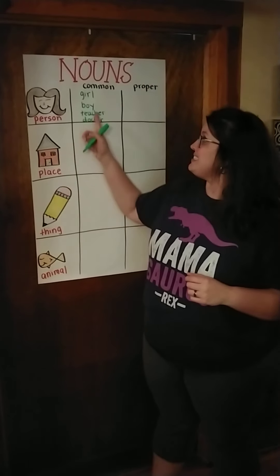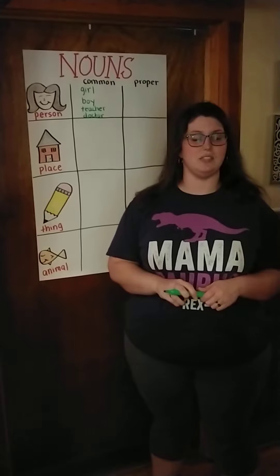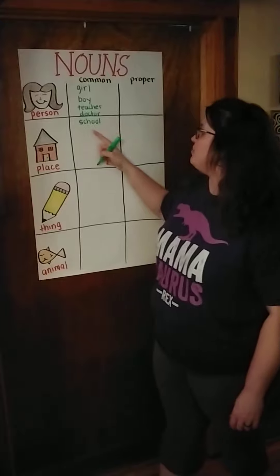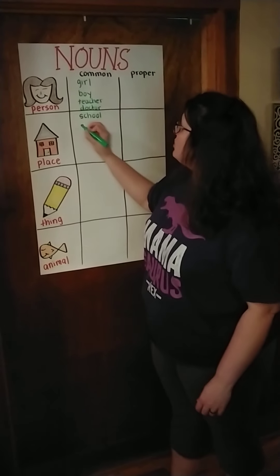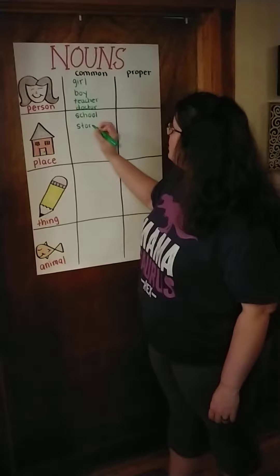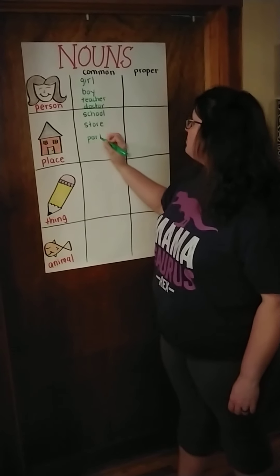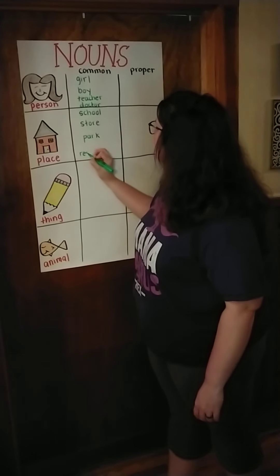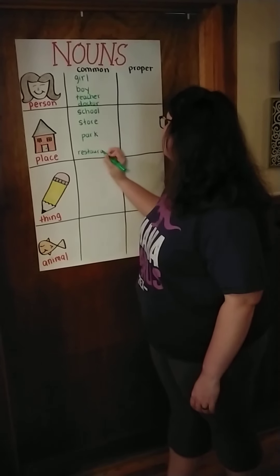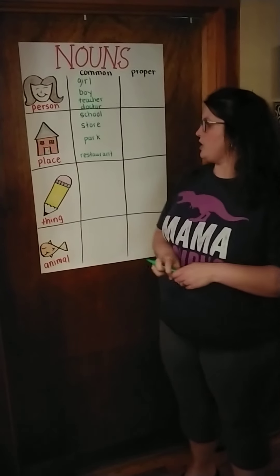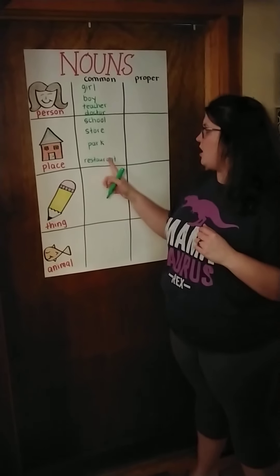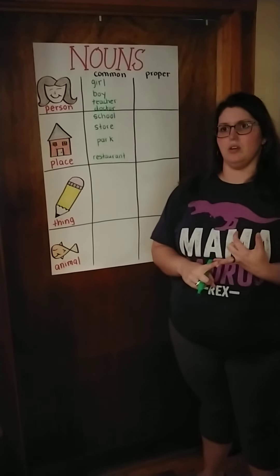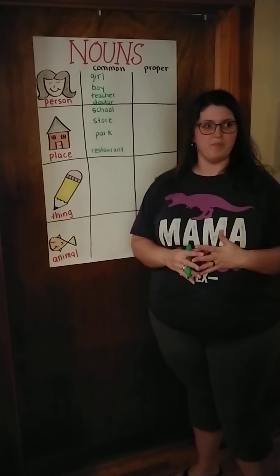Now let's go down to places — some common places. Places that you might go: you could go to school, you might go to the store or the park, maybe even a restaurant. Those are some common ones. Other places would be like church, your house, the mall — those are other places you might go.